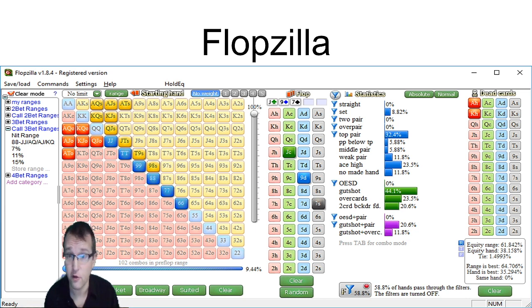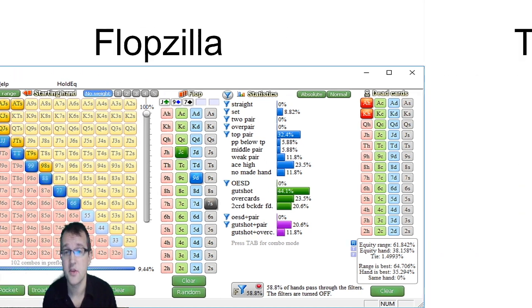Now if we were doing a full video on this we would then enter the turn card. We'd go through the action. We'd think about his range on the turn. Eliminate more hands from his range and continue to narrow down on what hands we think he might have. So this can be really illuminating and can be a massive help to your game.